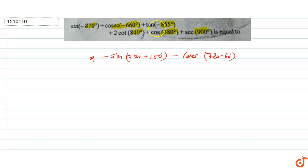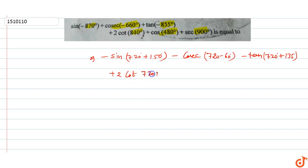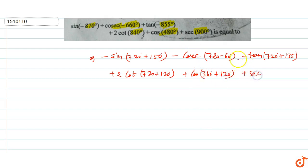For tan(-θ) = -tan(θ), so -tan(855°), and 855° = 720° + 135°. Then 2cot(840°) = 2cot(720° + 120°), plus cos(480°) = cos(360° + 120°), plus sec(900°) = sec(720° + 180°).